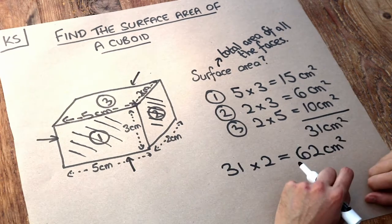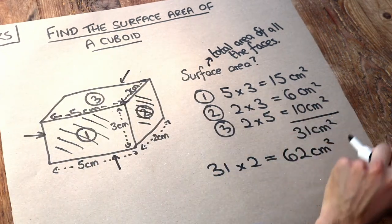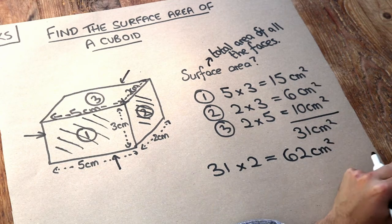So just to sum up, find the area of each of these three different faces here, add them up, and then just double it to also include the faces that you can't see as well.